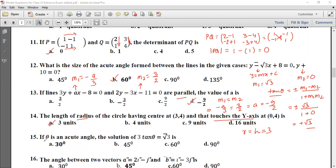Problem 15: If theta is an acute angle, the solution of 3 tan theta equal to root 3 is. So 3 tan theta equals root 3, so tan theta equals 1 upon root 3, which equals tan 30 degrees. So this is equal to 30 degrees, acute angle is 30 degrees.